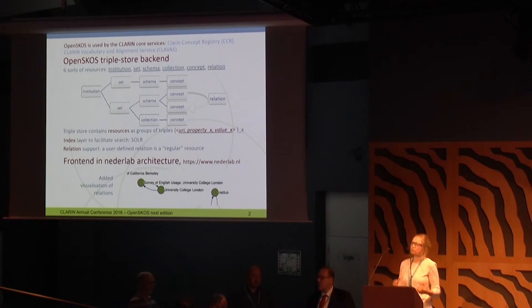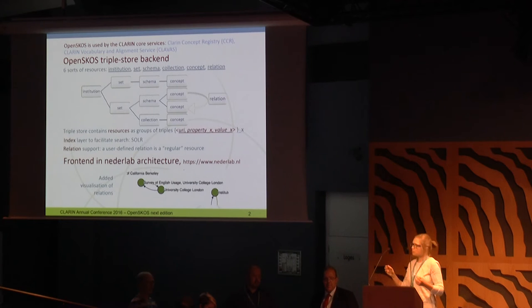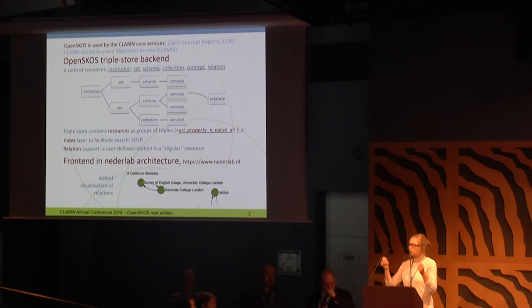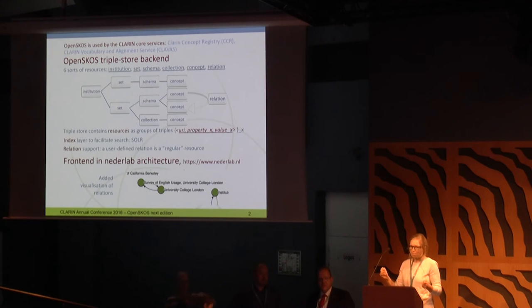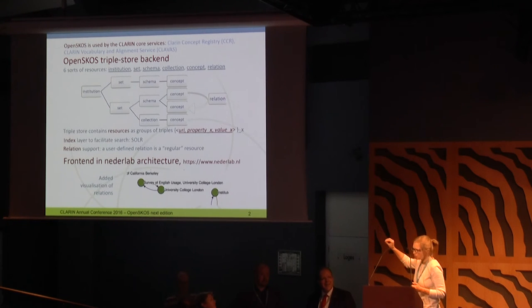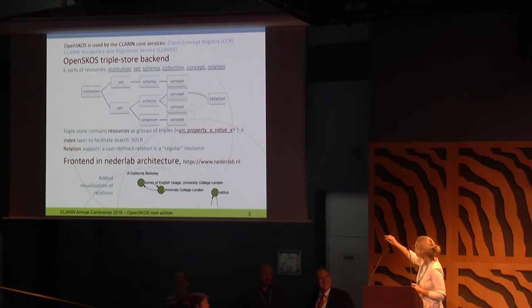As it follows from its name, the resources in this database are represented as triples — subject, property, object — where the subject is a URI of the resource. So a bunch of triples describe the resource. And for each resource we have a hierarchy, and the hierarchy of the concepts and elements of the thesauri are at the very low level of that hierarchy.